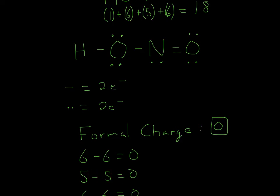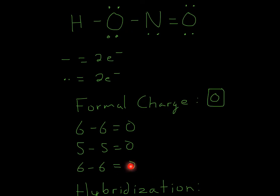Now once again, this oxygen, we count 1, 2, 3, 4, 5, 6. So 6 minus 6 is equal to 0. So once again, we have zero formal charge on all three of these elements.